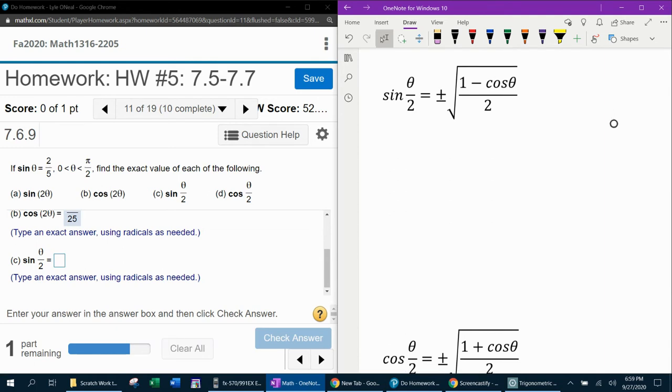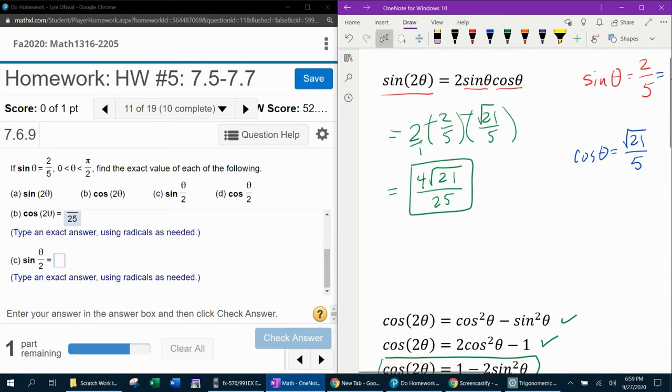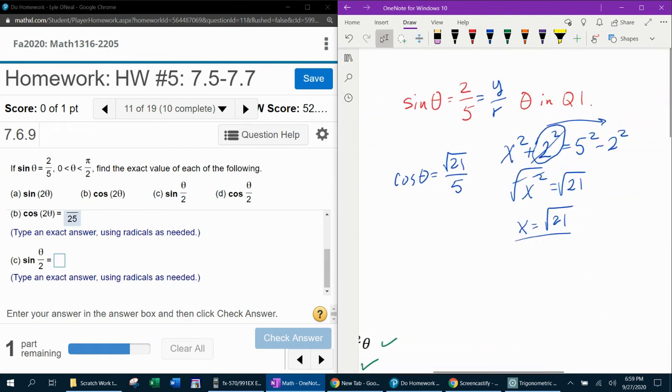So here I've got sine of theta over 2. Notice it does have a plus or minus out front. That doesn't mean that there's going to be two answers. It means that the answer is either going to be positive or negative, and you have to choose the correct one. So, this outcome is going to be positive, and here's why. Remember that they told us that theta was a quadrant one angle. So, if you take half of theta, it's still going to be in quadrant one. And the sine and the cosine in quadrant one are both positive. So, I know that these are going to be positive answers.